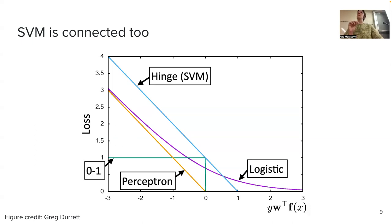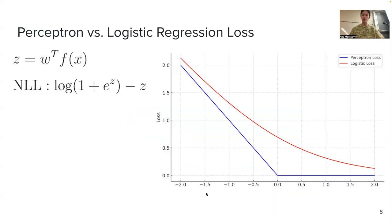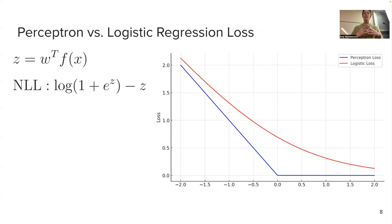The advantage of logistic regression over perceptron is that it's smoother. With perceptron, if you're just slightly to one side of zero, you make a completely different decision — a sharp jump. With logistic regression, small differences in the dot product don't cause these huge jumps. That smoothness is the main advantage, particularly in the region near zero where the model is uncertain.